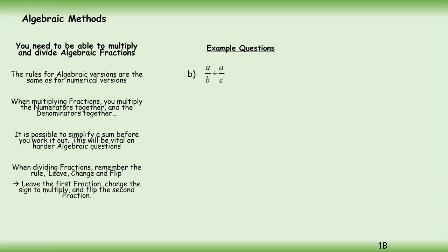Another one, this time using letters again. A over b times the reciprocal c over a. The a's cancel, leaving us with c over b. Make some notes as required, and then we move on to the next question.